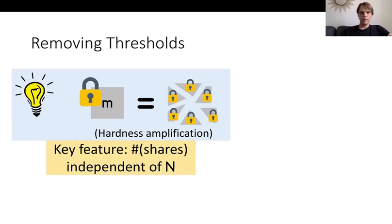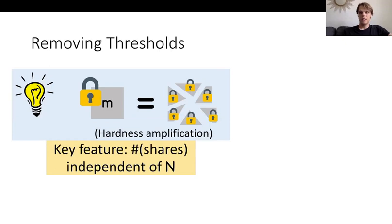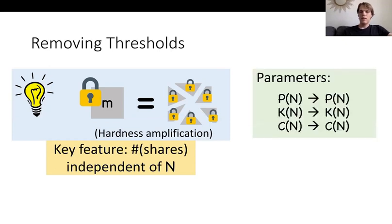Our next result shows how to remove the threshold limitation. The idea is pretty simple: suppose we have a traitor tracing scheme with the threshold limitation — we can only trace decoders that decrypt most of the time. What we do is take a message we want to encrypt, split it into a bunch of shares using a t-out-of-t secret sharing scheme, and then encrypt each share separately. This essentially performs hardness amplification, transferring a decoder with very small success probability into one with a much larger success probability. The key feature is that the number of shares we need is independent of the number of users N and can be taken to be just the security parameter. Therefore, we don't change the asymptotics of any parameter as a function of N.